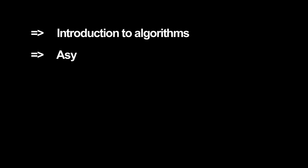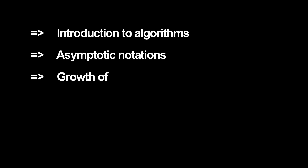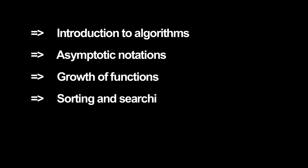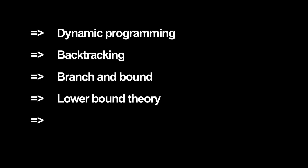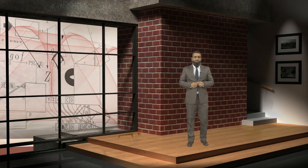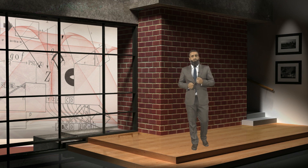We have structured the course in four units, within which the topics broadly covered include: introduction to algorithms, asymptotic notations, growth of functions, sorting and searching, greedy method, dynamic programming, backtracking, branch and bound, lower bound theory, and approximation algorithms.